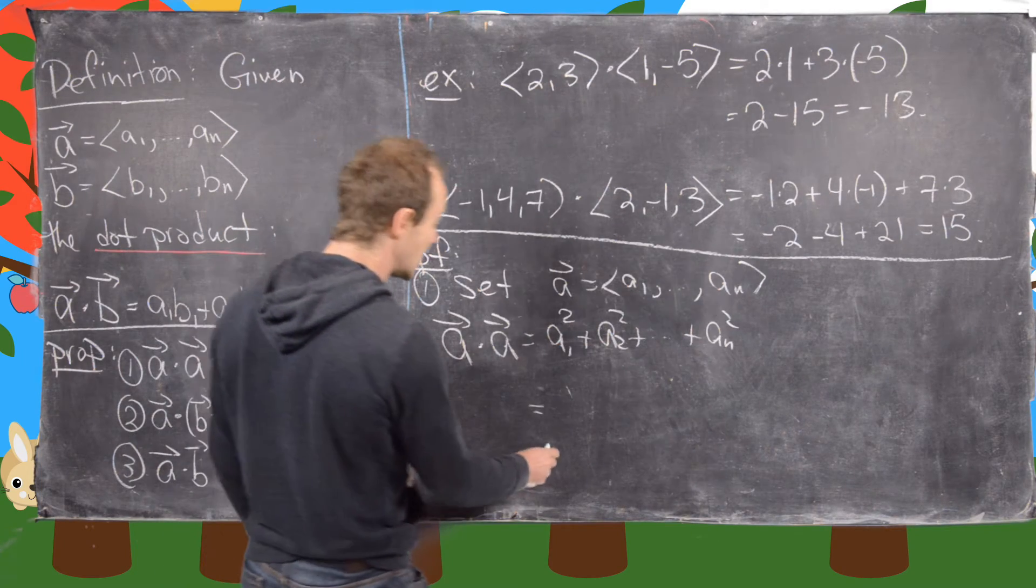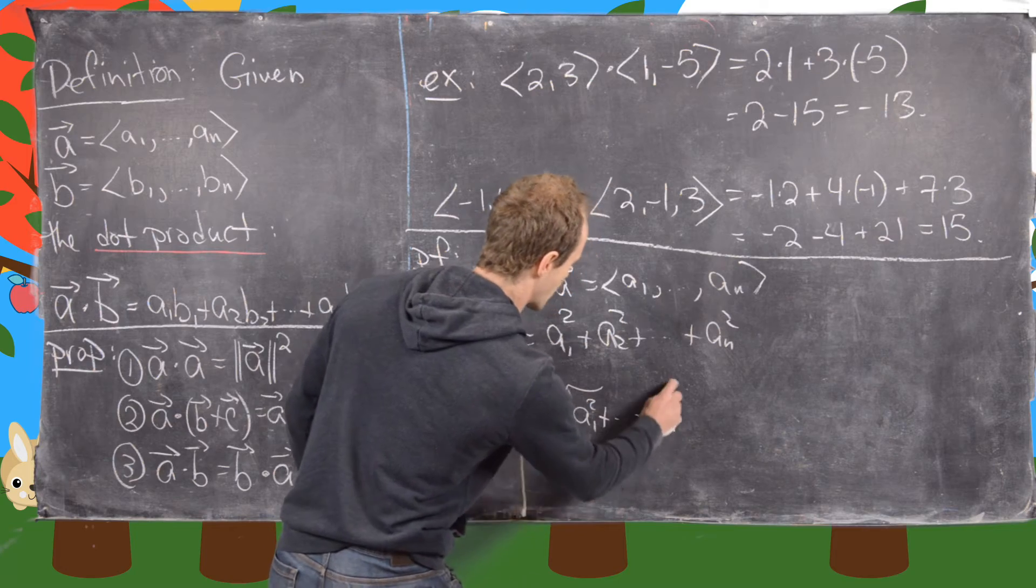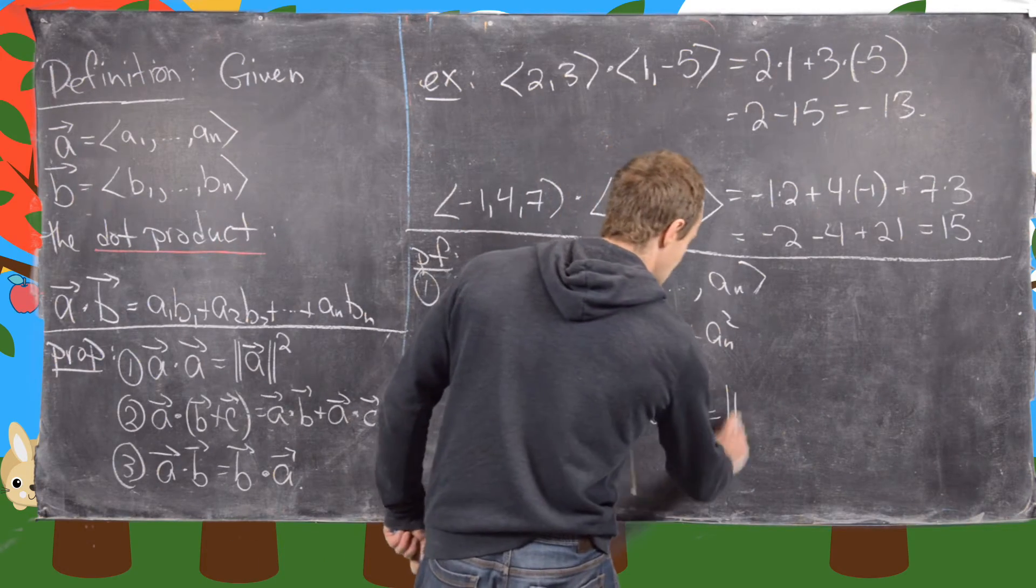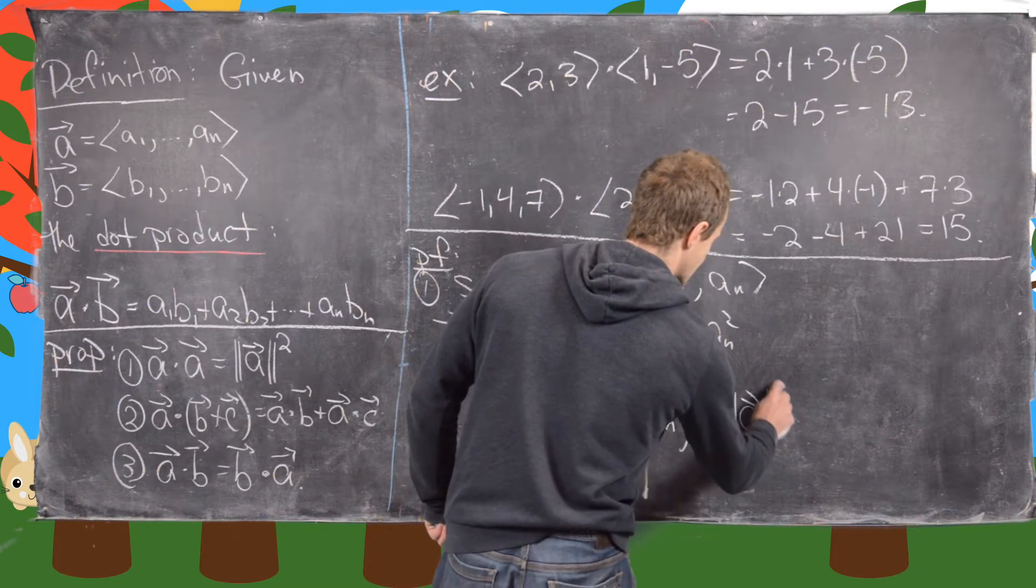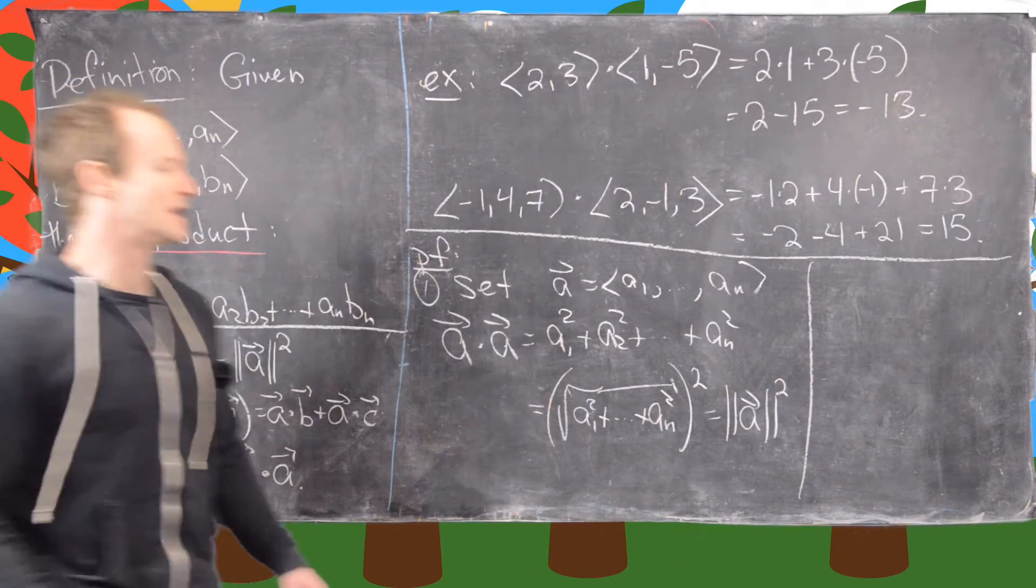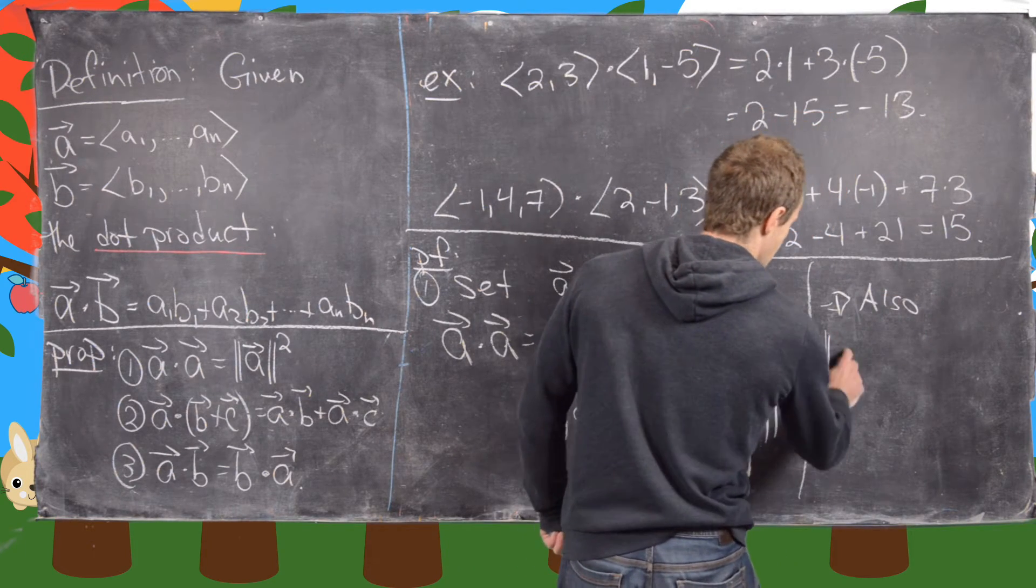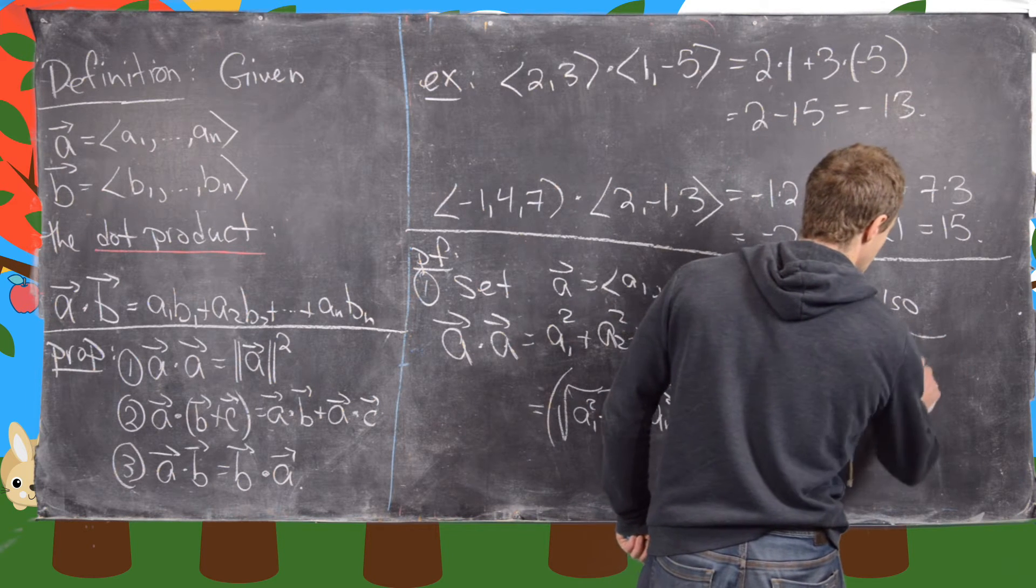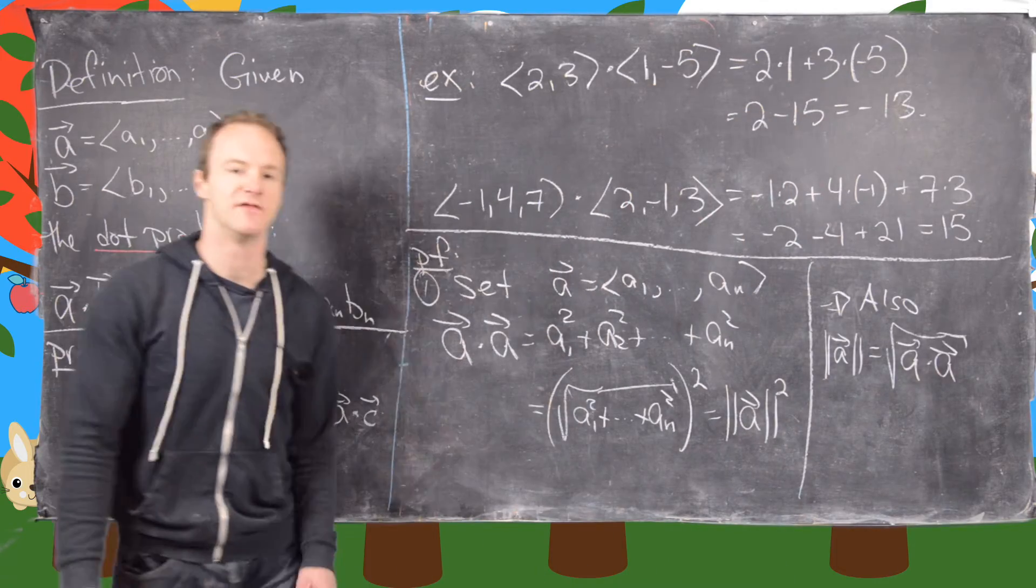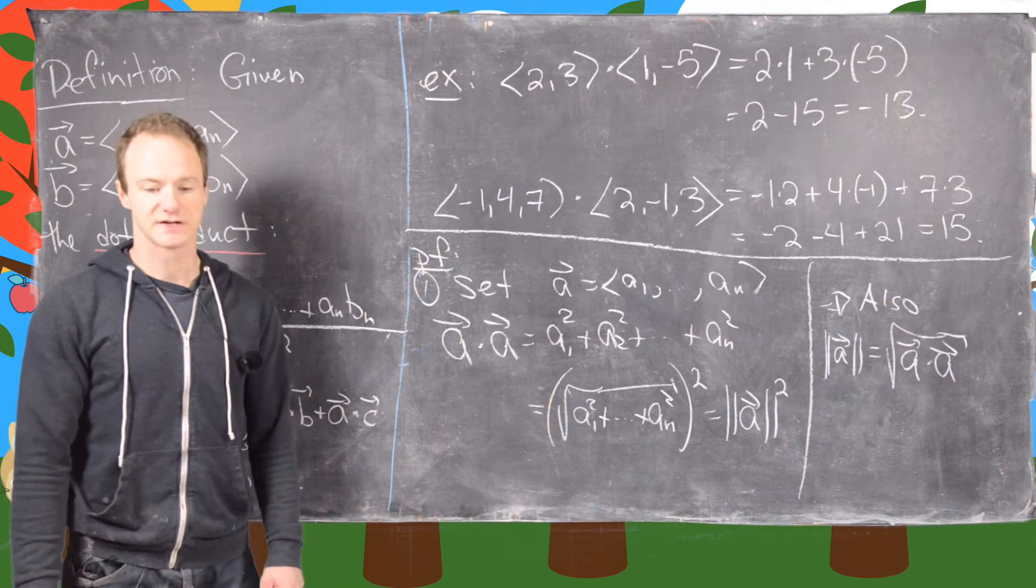But now notice that this equals the square root of A1 squared up to AN squared quantity squared. But that is exactly equal to the length of A squared. Okay, great. So we've proven number one here. But now notice that allows us to also write the length of a vector A is equal to the square root of the dot product of it with itself. Okay, good. So here are some preliminary results about the dot product.